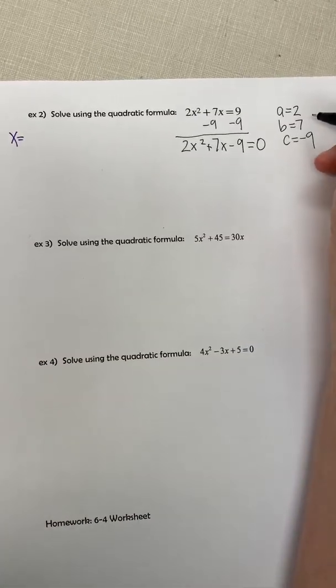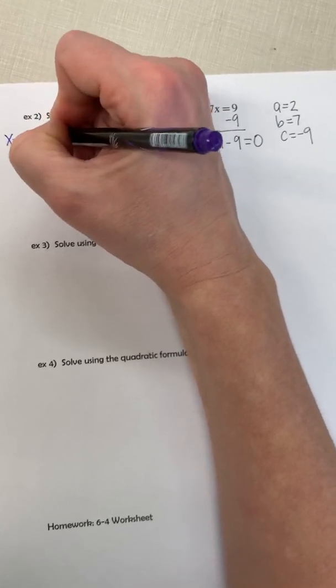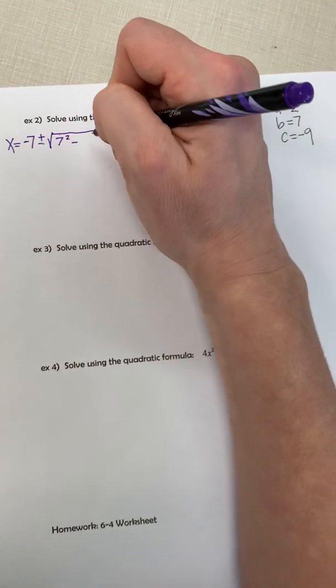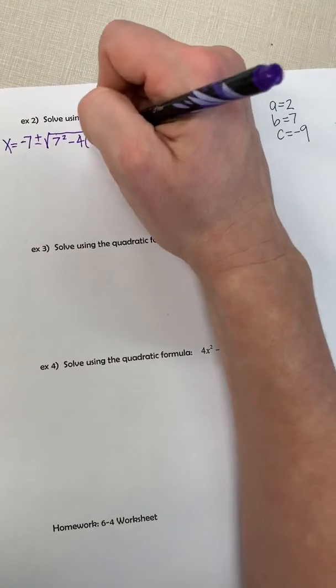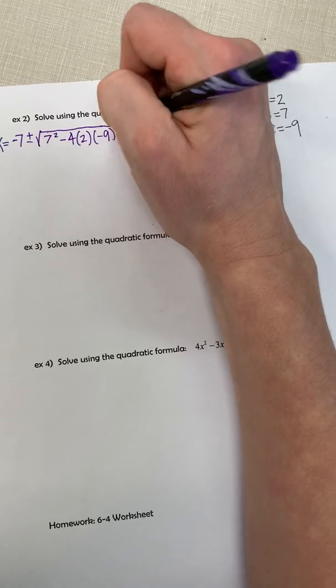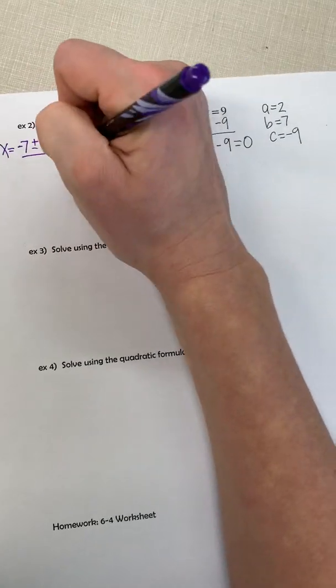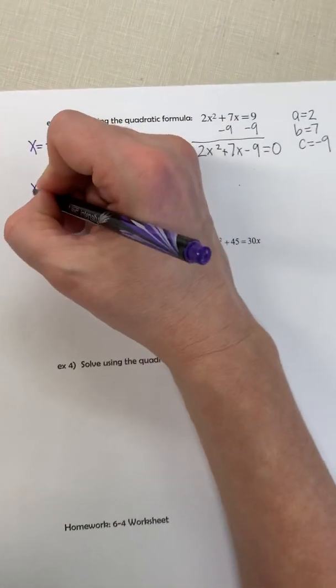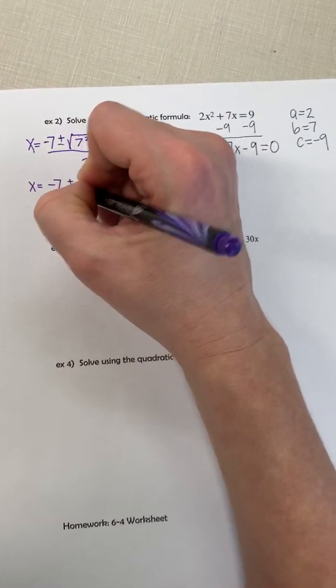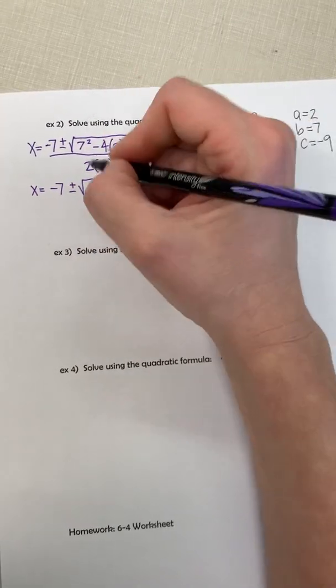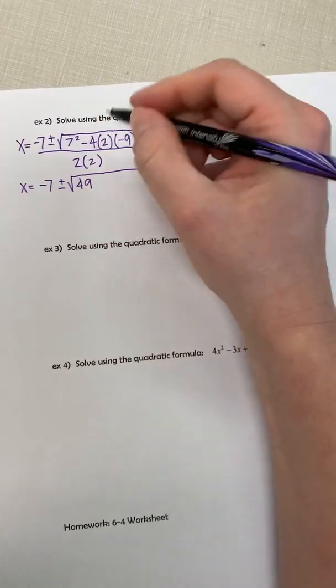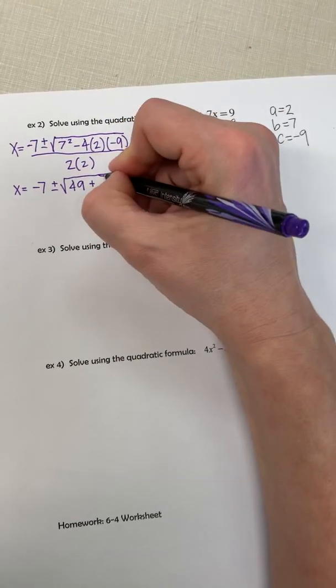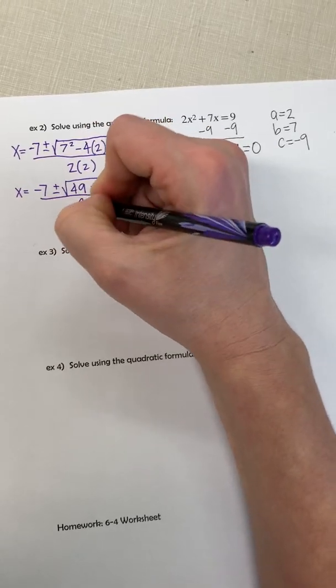Opposite of B this time—opposite of 7 is negative 7—plus or minus the square root, B squared, minus 4 times A times C, all over 2 times A. So 7 squared is 49. Negative times negative is going to be positive, and this is going to be 4 times 2 times 9, which is 72, all over 4.